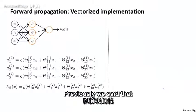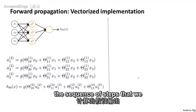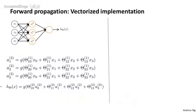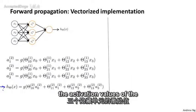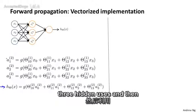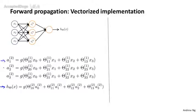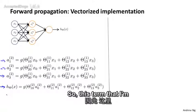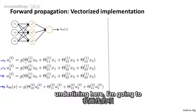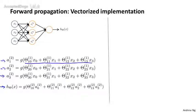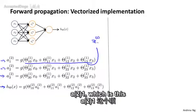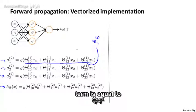Consider this neural network. Previously, we said that the sequence of steps we need to compute the output of a hypothesis is these equations on the left, where we compute the activation values of the three hidden units and then use those to compute the final output h of x. Now I'm going to define a few extra terms. This term that I'm underlining here I'm going to define as z superscript 2 subscript 1, so that a21 is equal to g of z21.